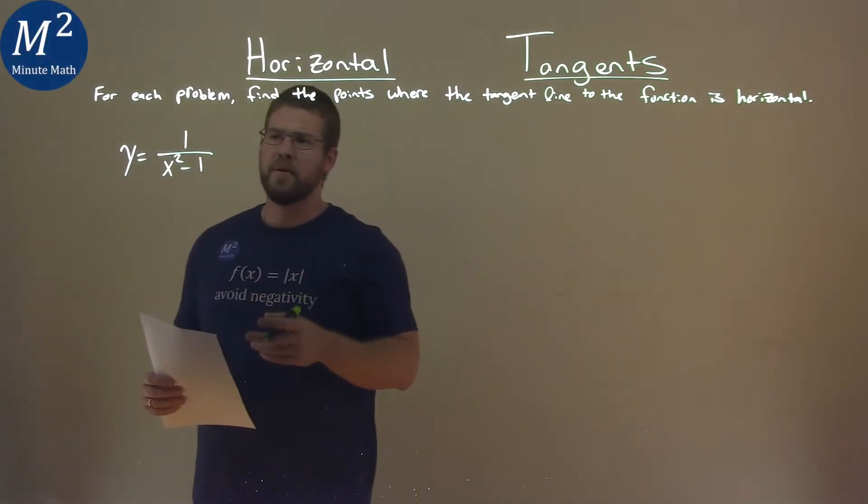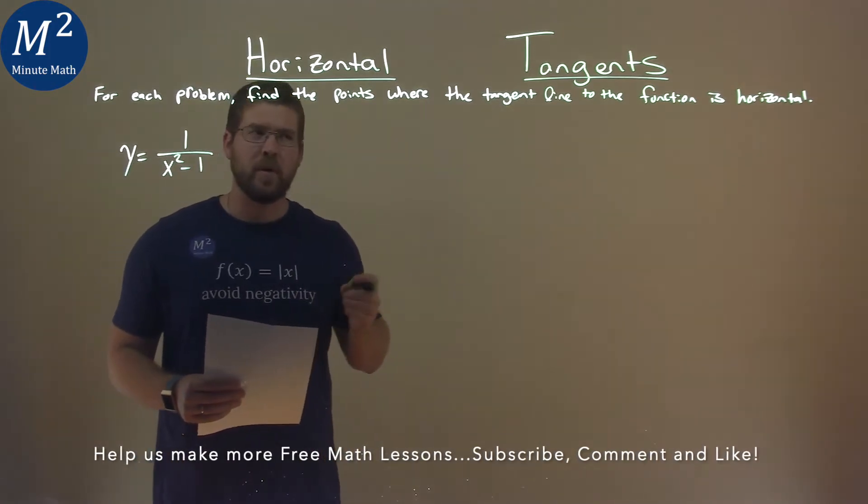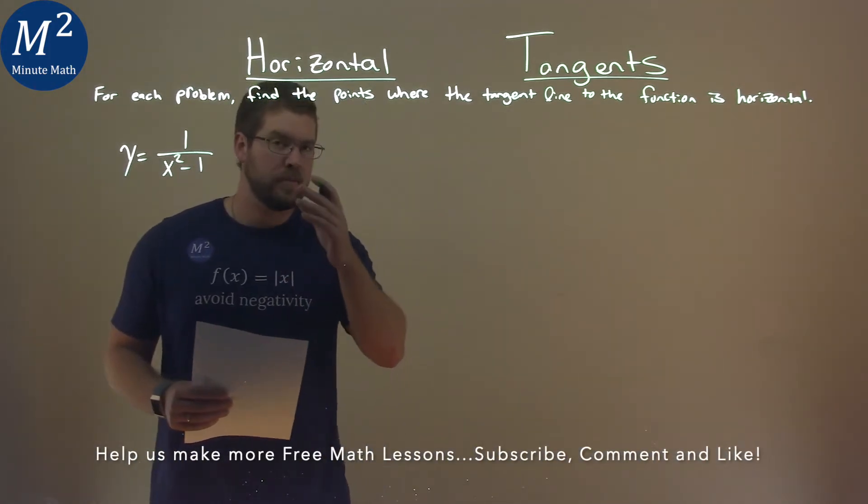We're given this problem right here, y equals 1 over x squared minus 1, and we want to find the points where the tangent line to this function is horizontal.